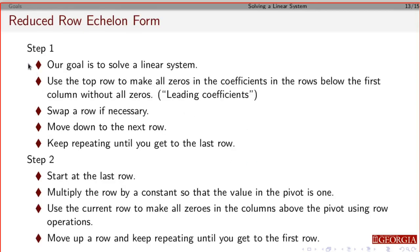For reduced row echelon form, we do the exact same thing for the first step. Then for the second step, we go back. We start down at the bottom, multiply to get a 1 in the pivot, and then do the row operations to put zeros in every column of the rows above. Then we go to the row above it and keep repeating until we get to the very top.